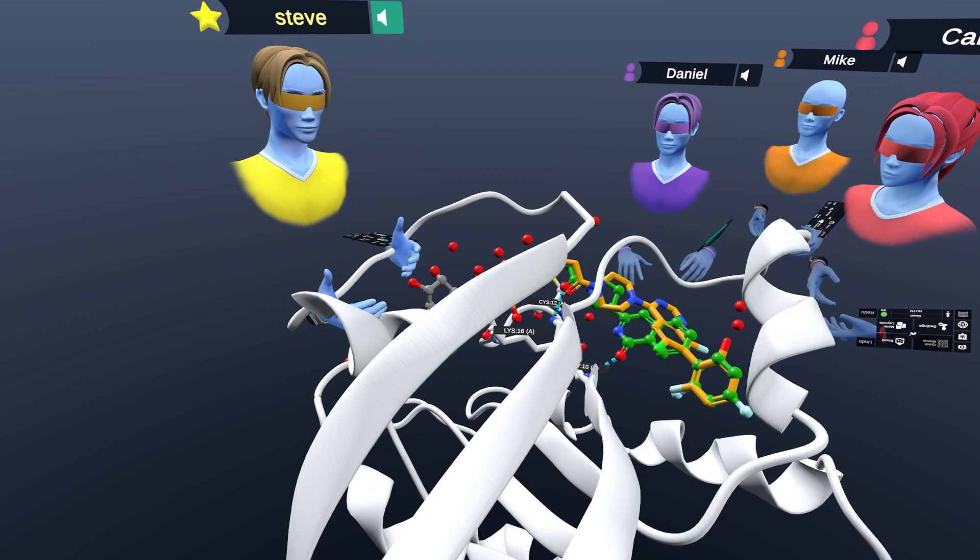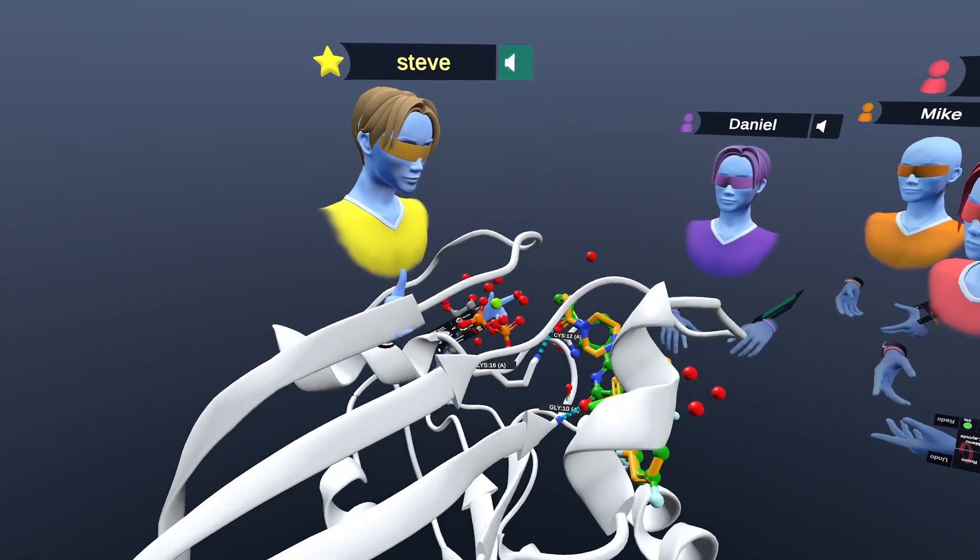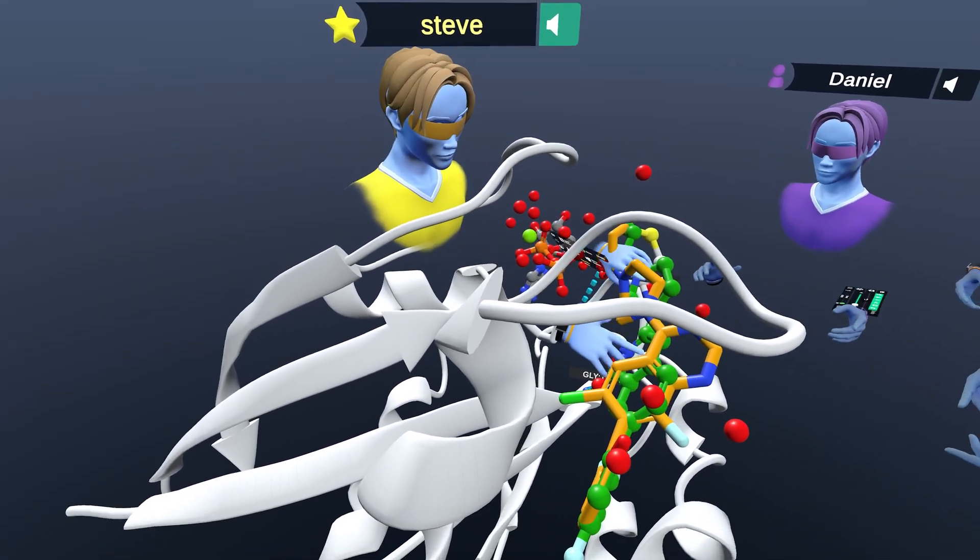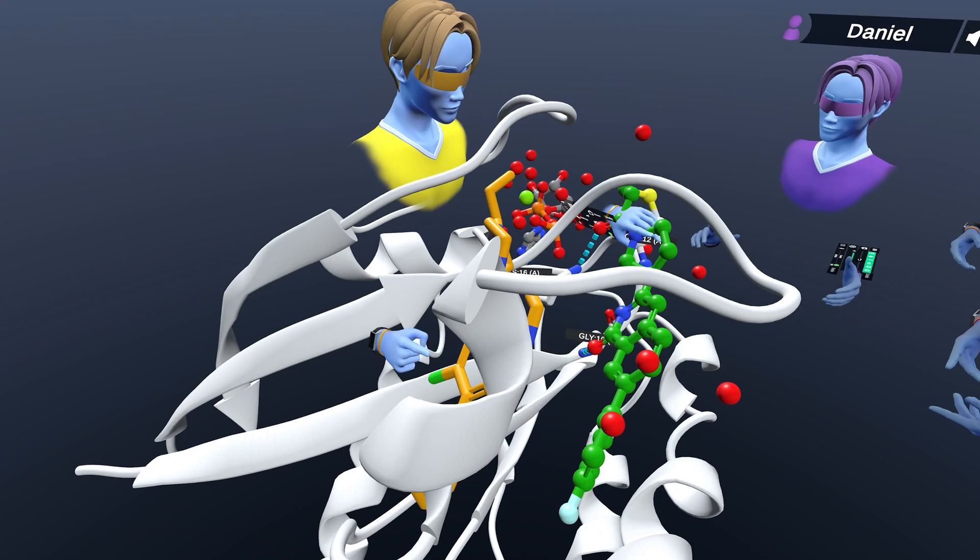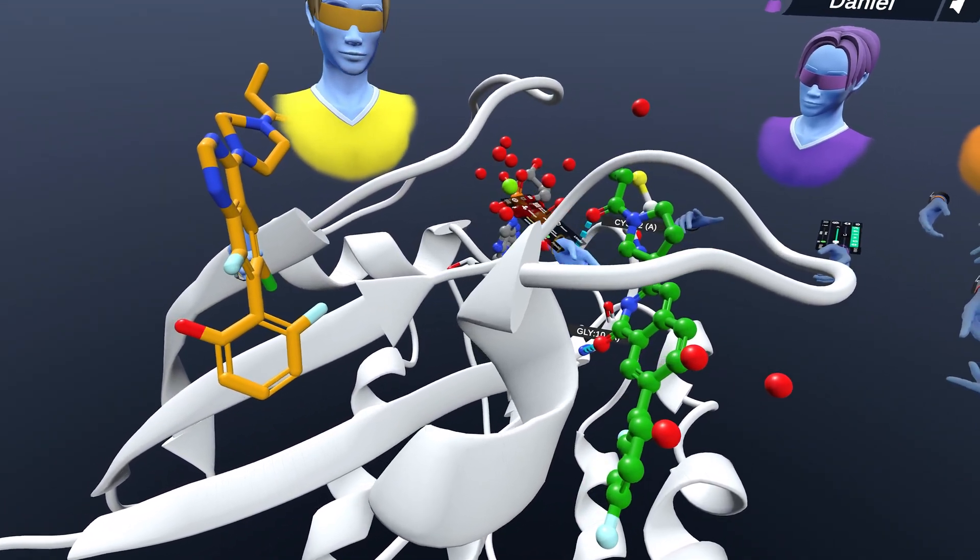Yeah, so this white structure is the same KRAS protein. This is actually a crystallized structure and we can see that there are new compounds in the green here. And so this green compound has been crystallized with the KRAS. That's why you see it so nicely.